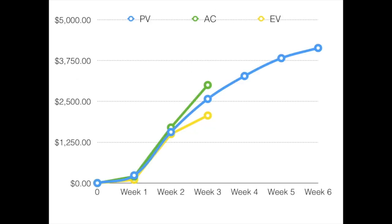I can plot this on a graph, showing the planned value for the entire planned duration of my project — shown in blue — as well as the actual costs, shown in green, and the earned value, shown in yellow.